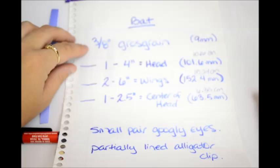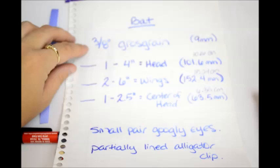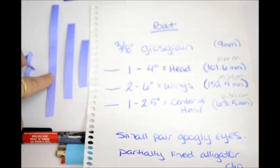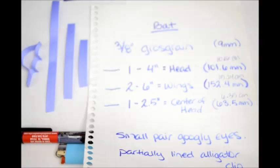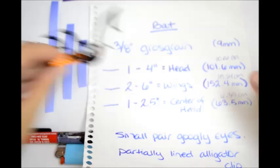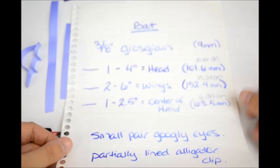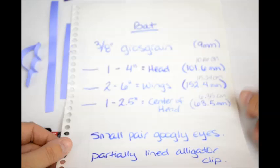We're going to use 3/8 inch grosgrain ribbon or 9 millimeter and we're going to need one piece that is 4 inches long for the head, then two pieces that are 6 inches long for the wings, and then one 2 1/2 inch piece for the center of the head. You're also going to need a small pair of Google eyes and a partially lined alligator clip or a pin or whatever you want to put it onto. This is your measurements. This is my poor little millimeter and centimeter conversion. So let's get started.